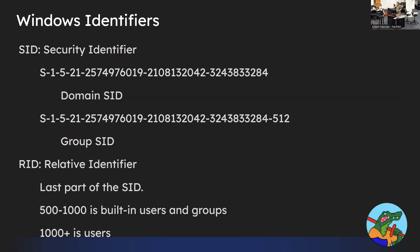On a domain, every single object has an identifier called a SID — the Security Identifier. That thing at the top is the domain SID, the identifier for the entire domain. So ufl.edu has a SID. You'll notice there's an extra dash at the end — for example 512 — that's the relative identifier (RID) for each user, group, or object. I'm pretty sure 500 is always the administrator. Users typically start at RID 1000. Given a domain, the RID would identify a user, a group, or a resource.